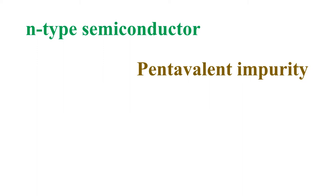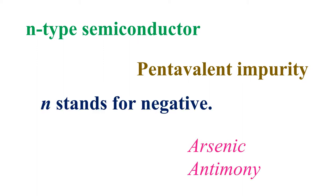N stands for negative. Typical examples of pentavalent impurities are arsenic and antimony. Such impurities are known as donor impurities.